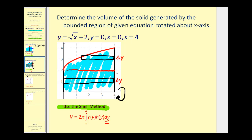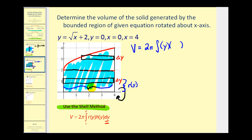Let's divide this into two different regions since we'll have two different definite integrals. For the lower rectangle first: the volume equals two pi times the definite integral of the radius times the height. The radius is the distance from the center of this rectangle to the x-axis, which is r of y equals y. The height is the distance across this lower region, which is always four. Since we're integrating with respect to y, the limits of integration for this region are from zero to two.